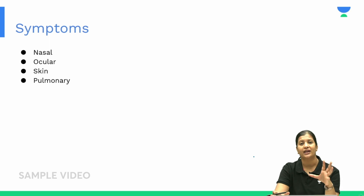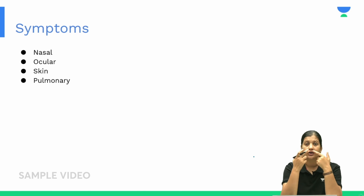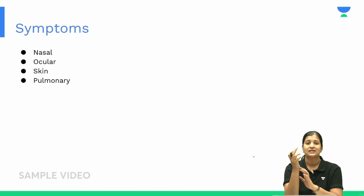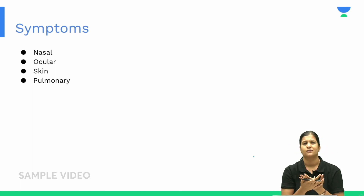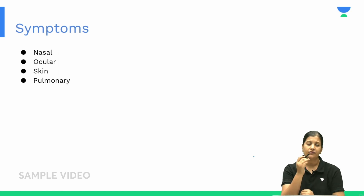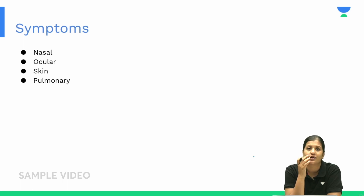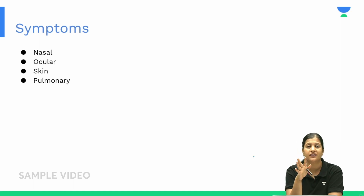Symptoms of allergy, whether seasonal or perennial, include nasal symptoms, ocular symptoms, skin symptoms, and pulmonary symptoms. For nasal allergy specifically, symptoms include itching in the nose, sneezing, nasal block, and watery nasal discharge.